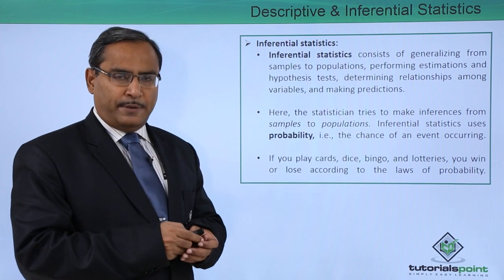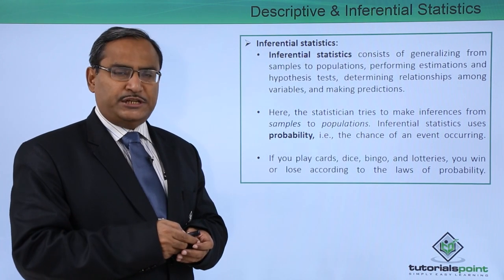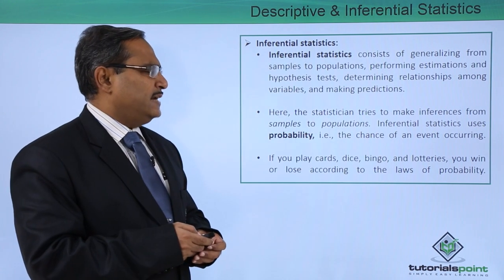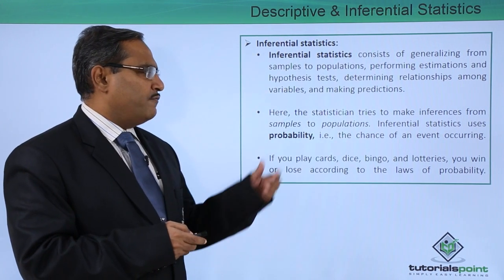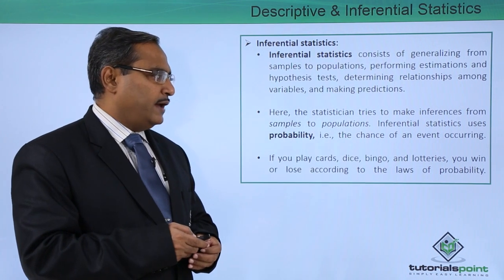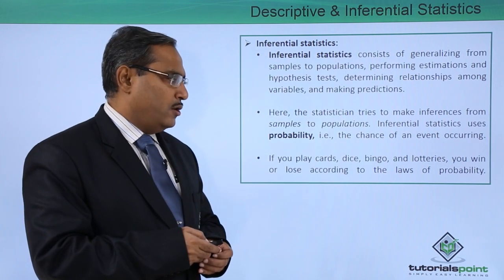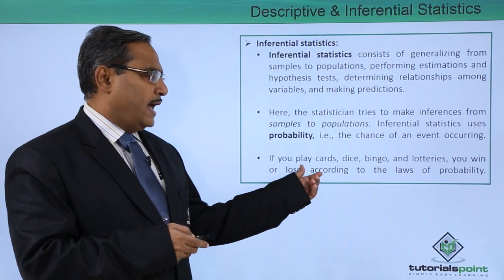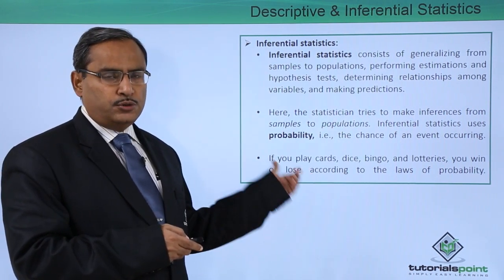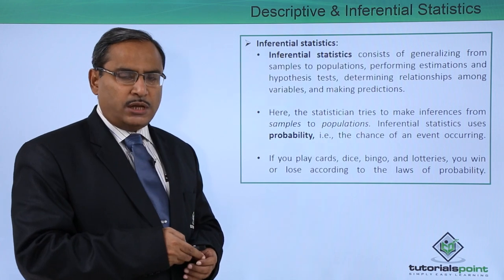Inferential statistics can make predictions and forecasting on data after analysis. The statistician makes inferences from samples to populations. Inferential statistics uses probability—the chance of an event occurring. If you play cards, dice, bingo, or lotteries, you win or lose according to the laws of probability. Inferential statistics use the concept of probability.